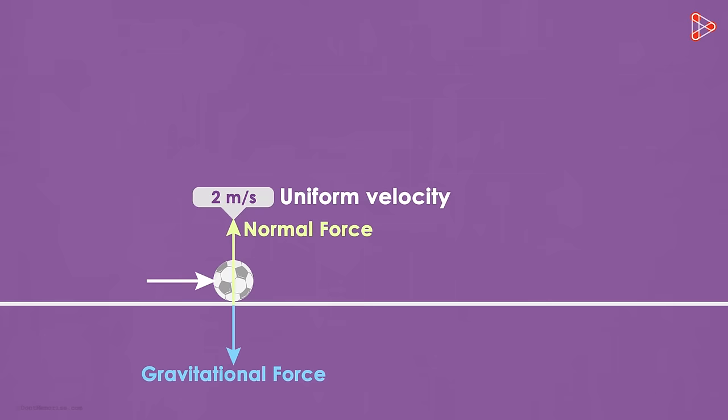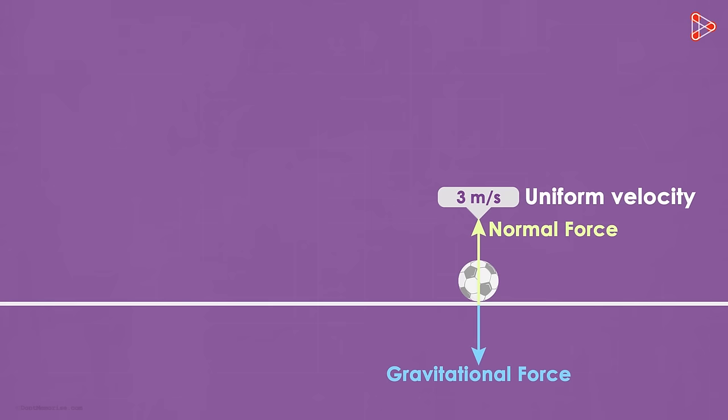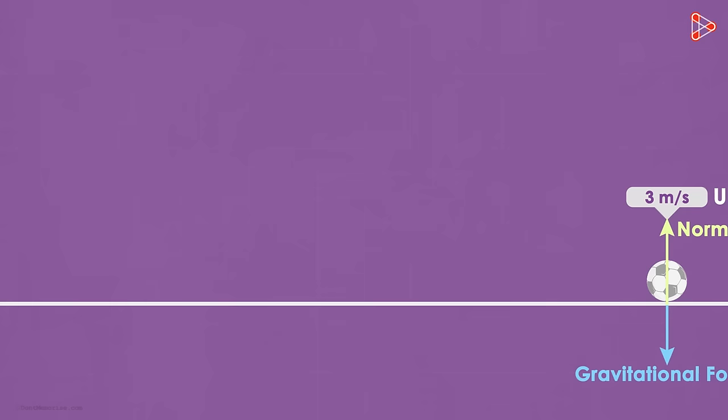Now when this ball is moving at 2 meters per second and there is an external force applied from the left, what will happen? Yes, the ball will accelerate. Its velocity will change. Let's say the velocity changes to 3 meters per second after this external force is applied. After that, the ball will continue to move at 3 meters per second unless acted upon by another external force.